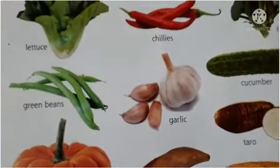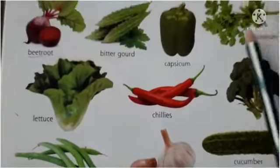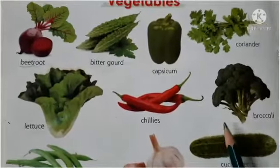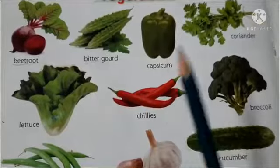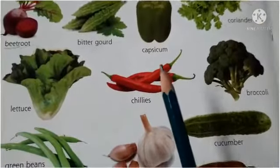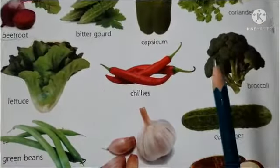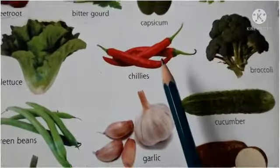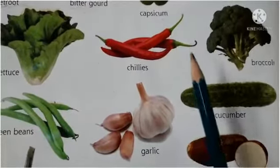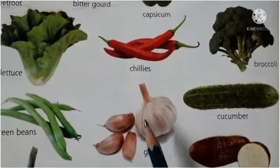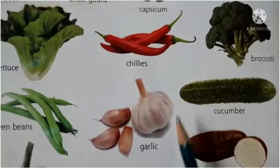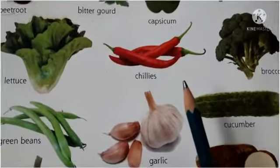Today children we are going to learn more about these vegetables. Here you can see some vegetables are used as spices — like chili or garlic. We use them to make our food tasty and spicy.